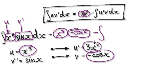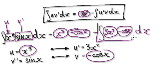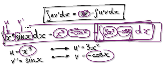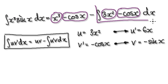Then we have the minus sign, followed by the integral of U prime times V. U prime is 3x squared, and V is minus cos x, so we have minus the integral of 3x squared times minus cos x dx. Notice that each time we apply the formula, the power reduces — from 3, to 2, to 1 — it gets simpler and simpler, but we still need to repeat the process again and again.